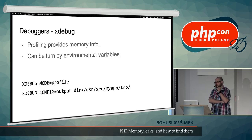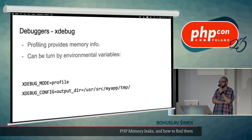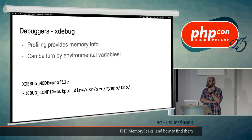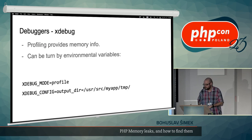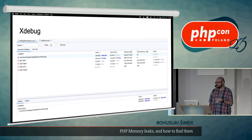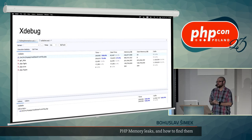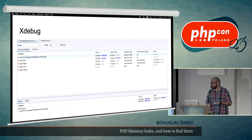Another tool for measuring memory is debuggers. Xdebug is the most commonly used PHP debugger. Its profiling mode provides memory information — you enable it via configuration variables, set a proper output directory, execute your script, and it generates a file you can analyze in PHPStorm, which shows aggregated memory usage per method. Personally, I don't find it clicks for memory debugging — I prefer using Xdebug's profiling for measuring speed rather than memory.